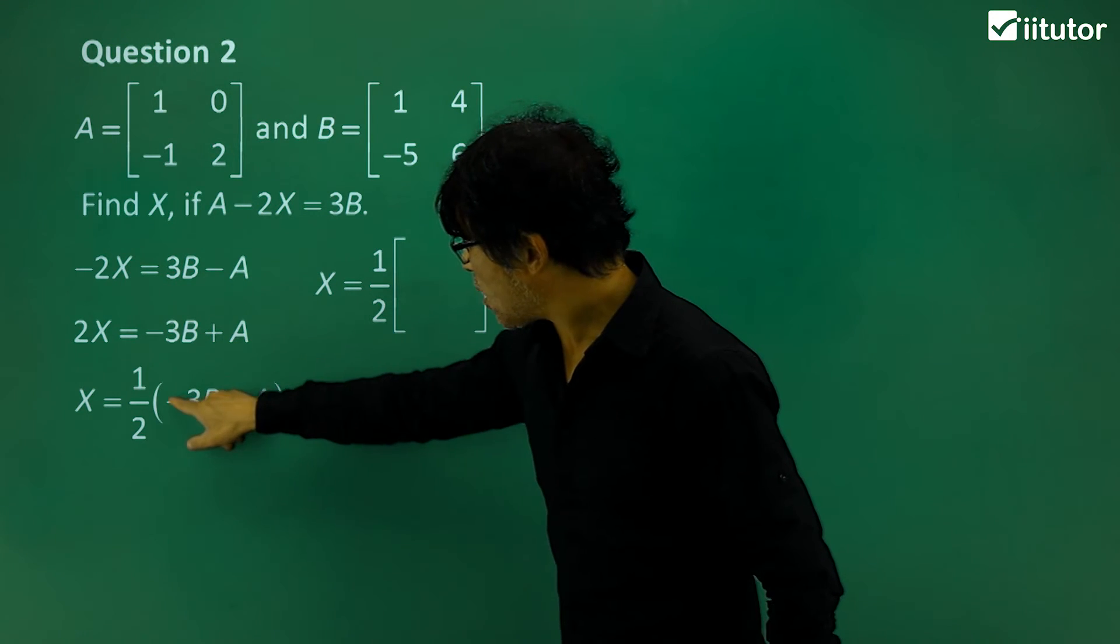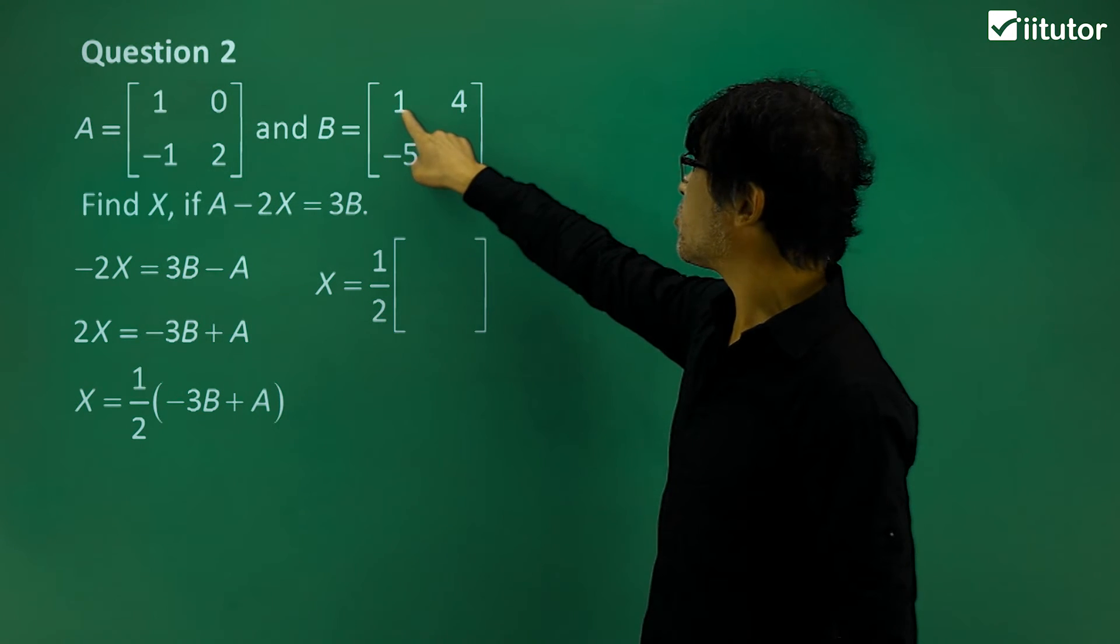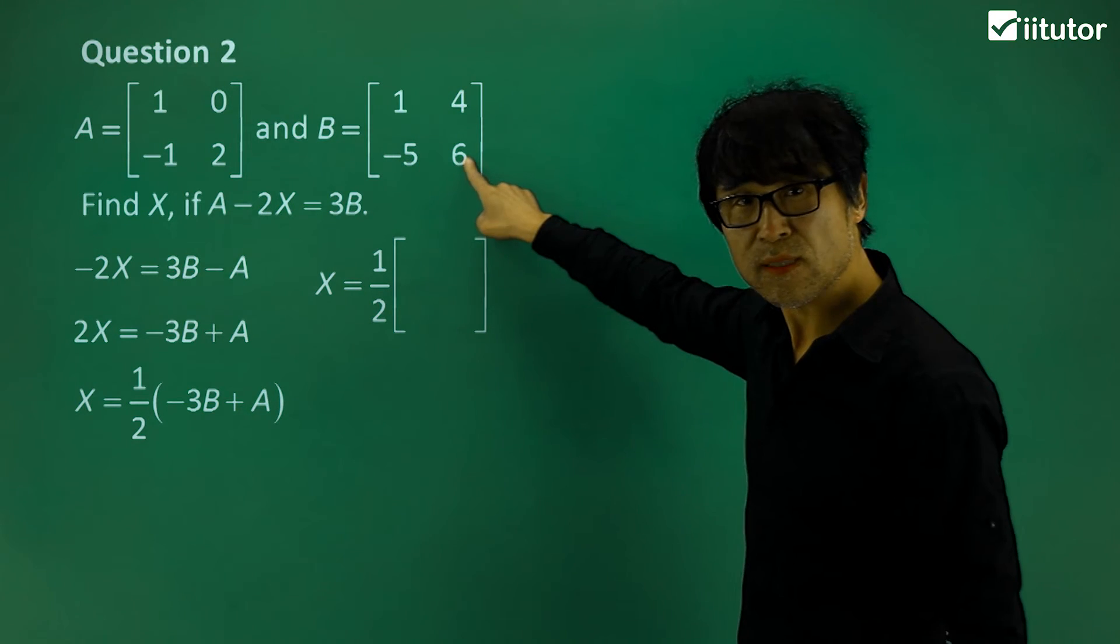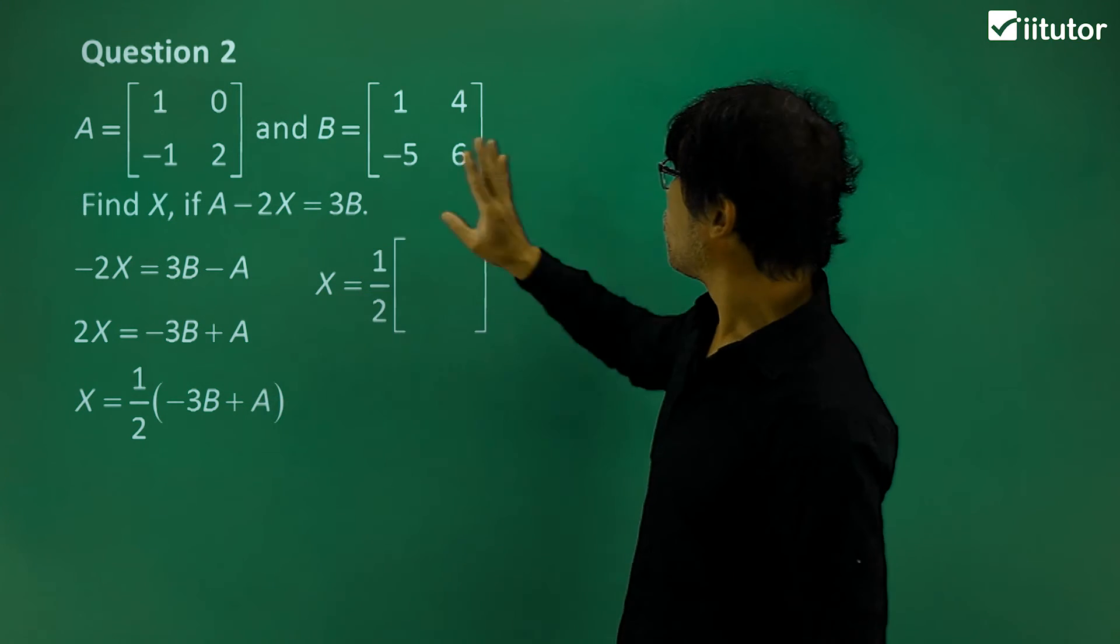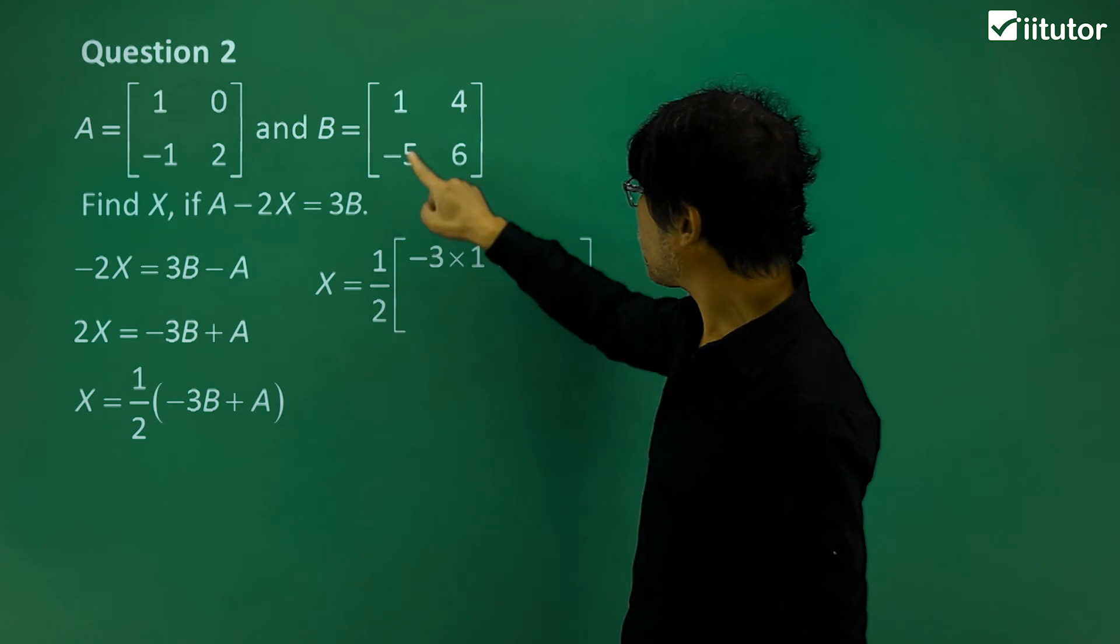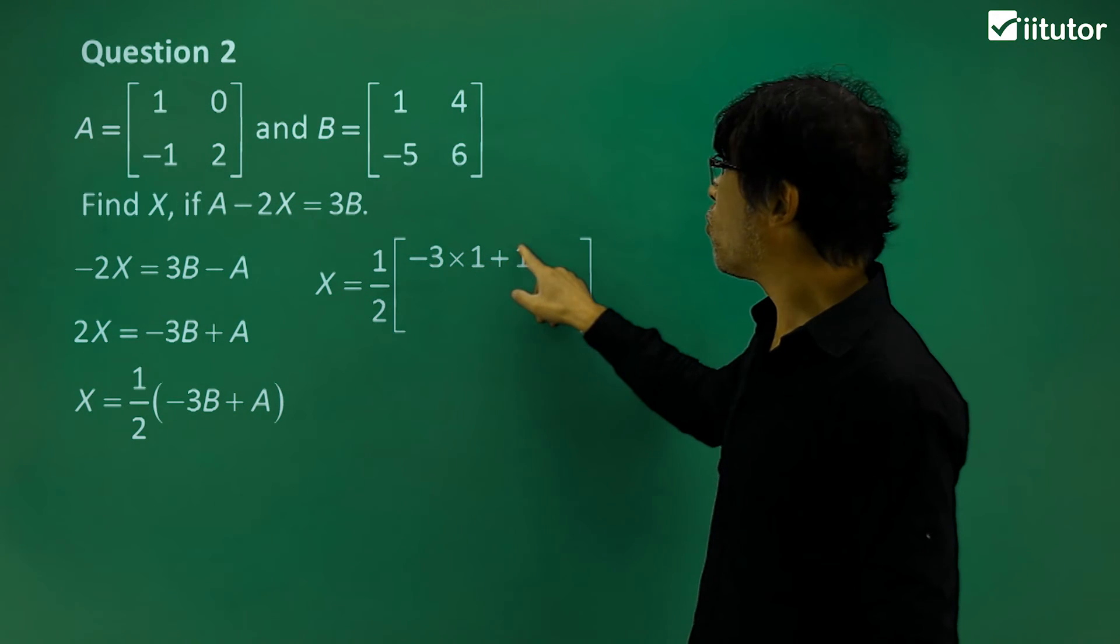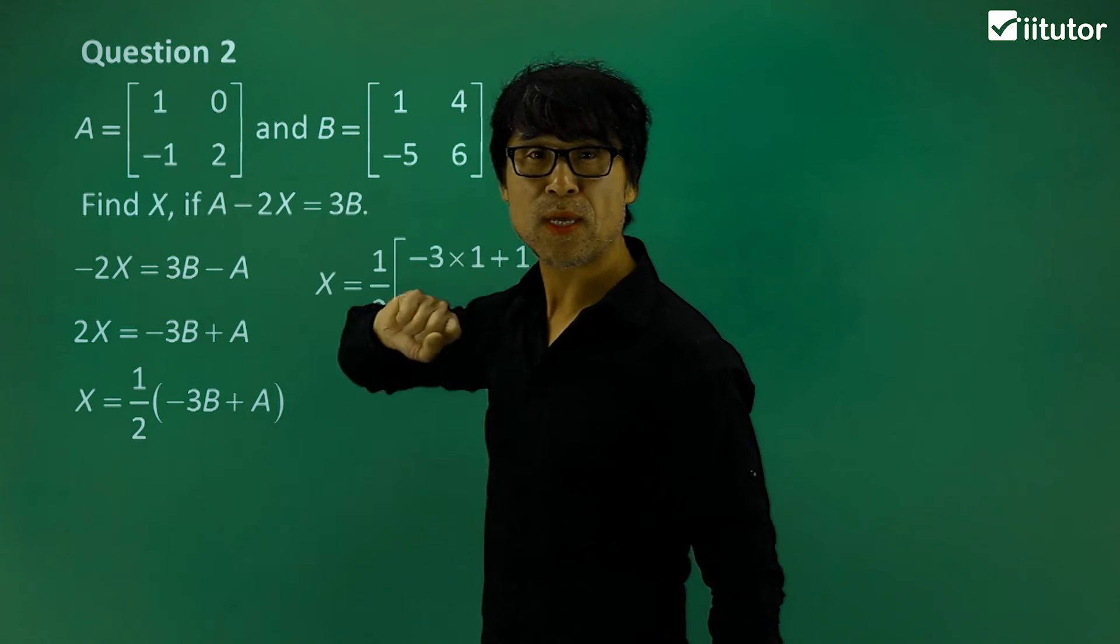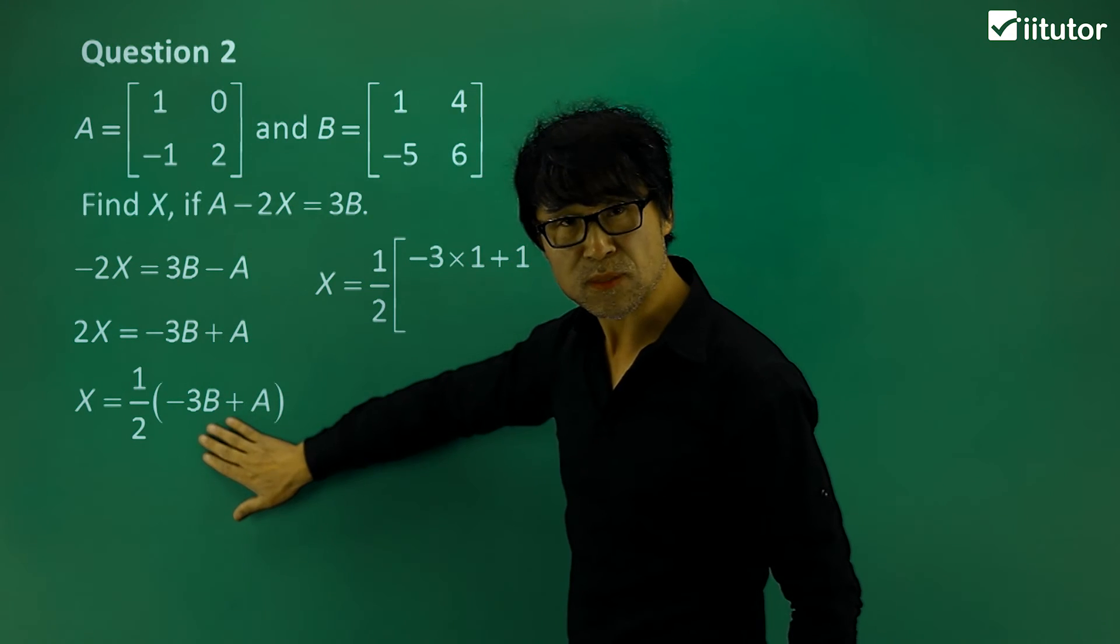So over here, so negative times by negative 3 times by negative 3 times by negative 3 and then plus A. So for example, the first one, so we have negative 3 times 1 plus 1. Where do you get it? Which is here, which is from there. So that is completely coming from this algebra. So this expression.